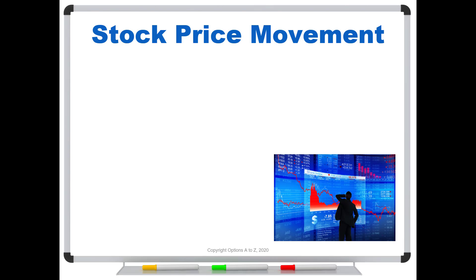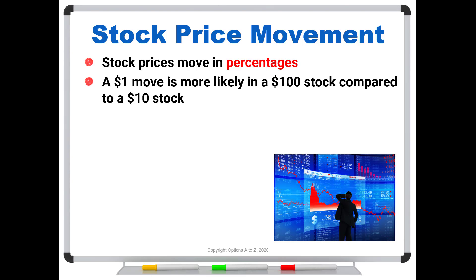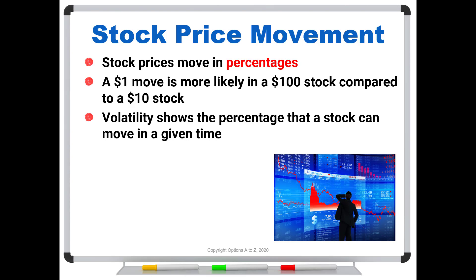First, we have to back up a little bit and talk more about a previous topic on stock price movement. Remember that stock prices move in percentages. A $1 move is more likely in a $100 stock compared to a $10 stock. We see very large dollar changes in stocks like Tesla or Amazon — very expensive stocks — or Berkshire Hathaway Class A, versus something like a penny stock. You just don't get very big price changes in the cheap stocks, but they can all move in the same percentages. Volatility shows the percentage that a stock price can move in a given time.